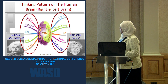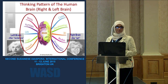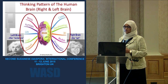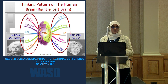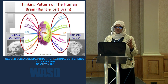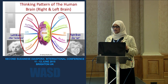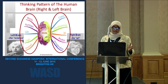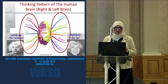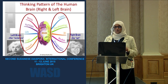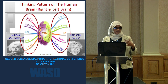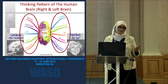Here we have the thinking pattern of the human brain. We have the right lobe and the left lobe of the brain. The right lobe is responsible for colors, imagination, and all visual images. The left lobe is responsible for words, numbers, lists, and analysis. So we can say the right side is for art and the left side is for logic and analysis.